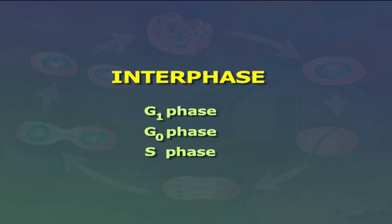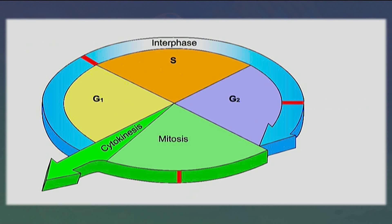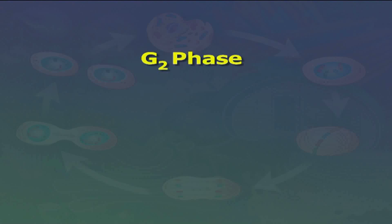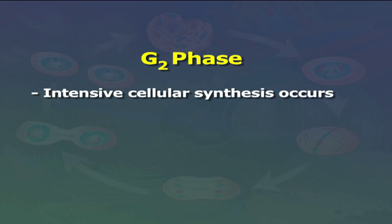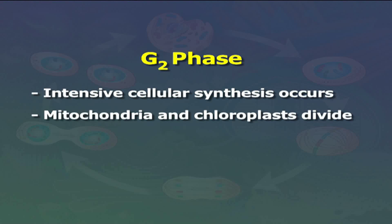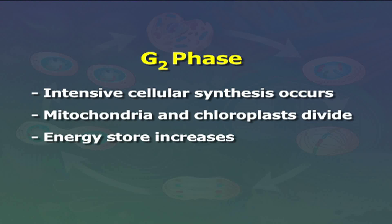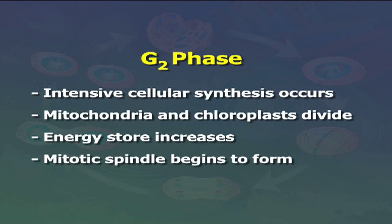G2 phase is the period from the end of S phase until mitosis begins, and it is usually the shortest part of interphase. During this phase, intensive cellular synthesis occurs: mitochondria and chloroplasts divide, energy stores increase, and the mitotic spindle begins to form.